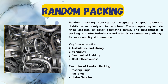Examples of random packing include: first, Raschig rings, which are simple cylindrical rings made of ceramic, metal, or plastic. Second, Pall rings, which are open cylindrical structures with several internal and external layers. Third, Intalox saddles, which resemble a series of stacked rings providing a large surface area. These are some of the most commonly used random packings.